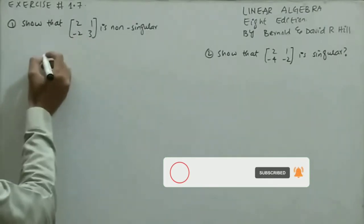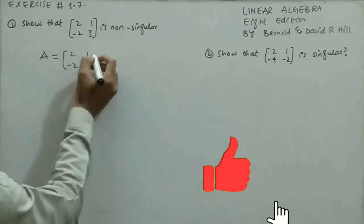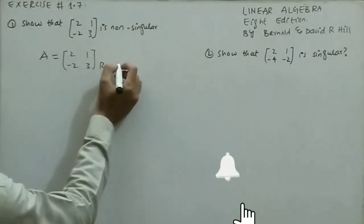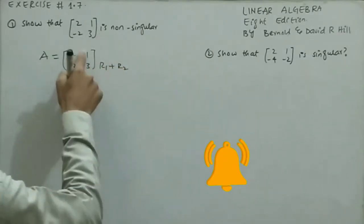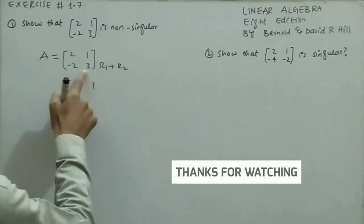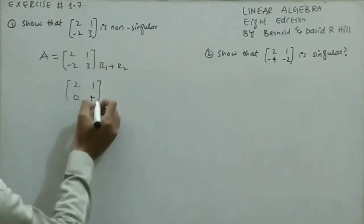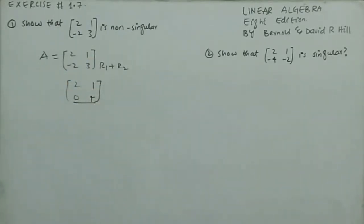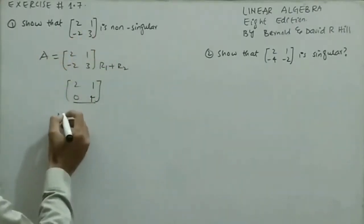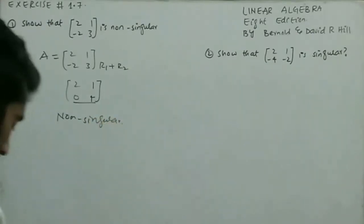The first question is: show that matrix A = [2, 1; -2, 3] is non-singular. I do the operation R1 + R2, so the first row comes down as it is. Then -2 + 2 gives us 0 and 3 + 1 gives us 4. Since this row is not entirely zero, the given matrix is non-singular.